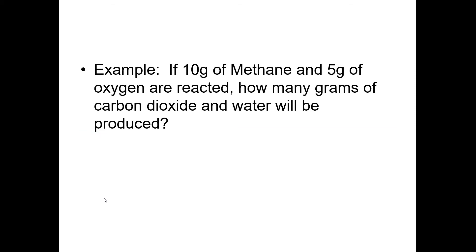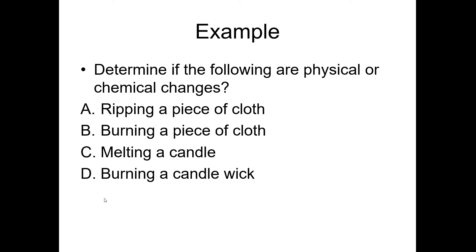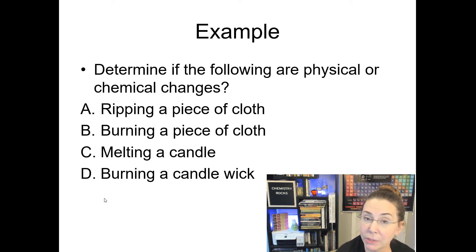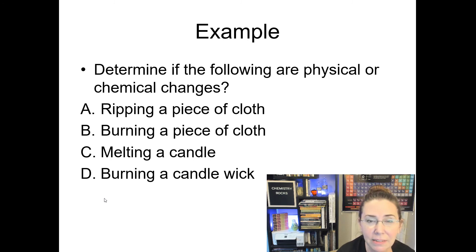We'll do more practice with this in class. Now I'd like you to try these four changes — determine if they're physical or chemical. Ripping a piece of cloth, burning a piece of cloth, melting a candle, burning a candle wick. For A, ripping a piece of cloth — that would be a physical change. For B, burning a piece of cloth — that would be a chemical change because burning is combustion. C, melting a candle — that would also be a physical change because melting is a phase change and phase changes are always physical. And lastly, burning a candle wick — burning is an example of combustion, so this would be a chemical change.